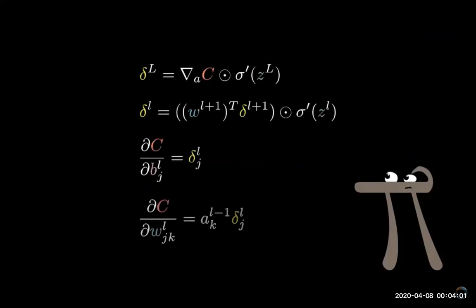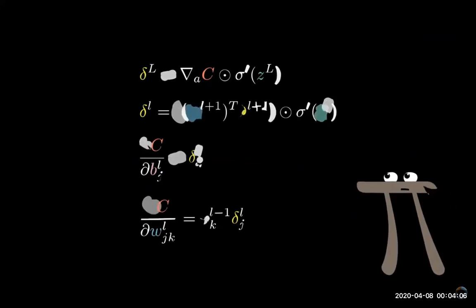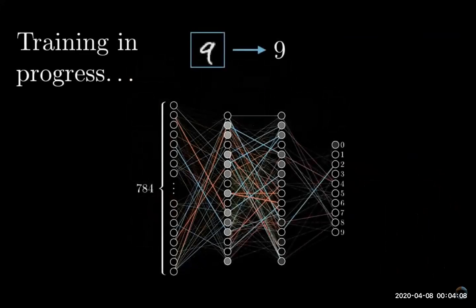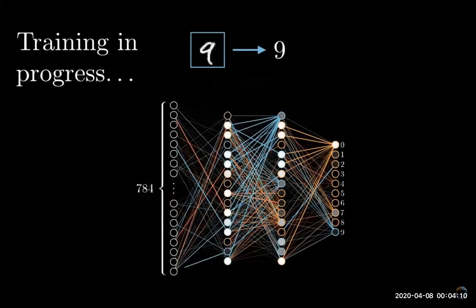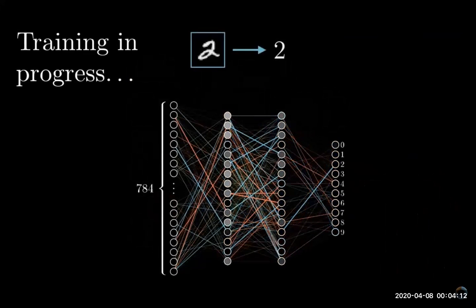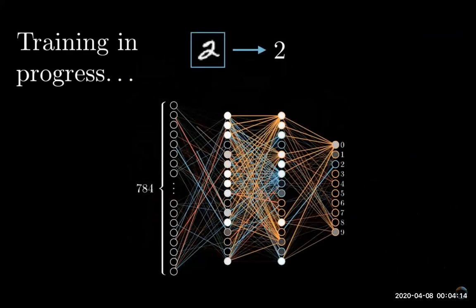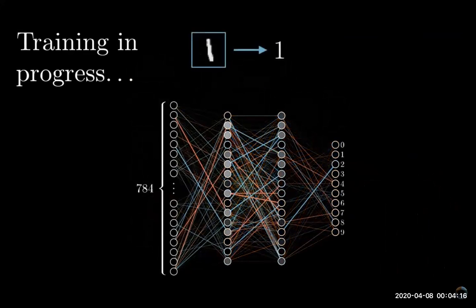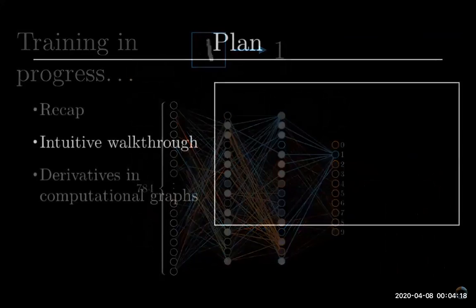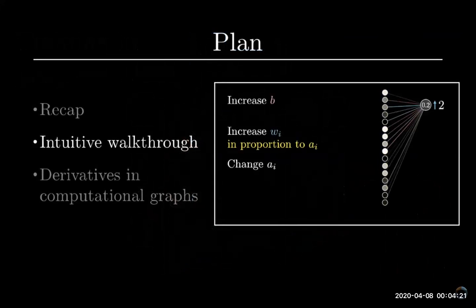When I was first learning about back propagation, I think the most confusing aspect was just the notation and the index chasing of it all. But once you unwrap what each part of this algorithm is really doing, each individual effect is actually pretty intuitive.